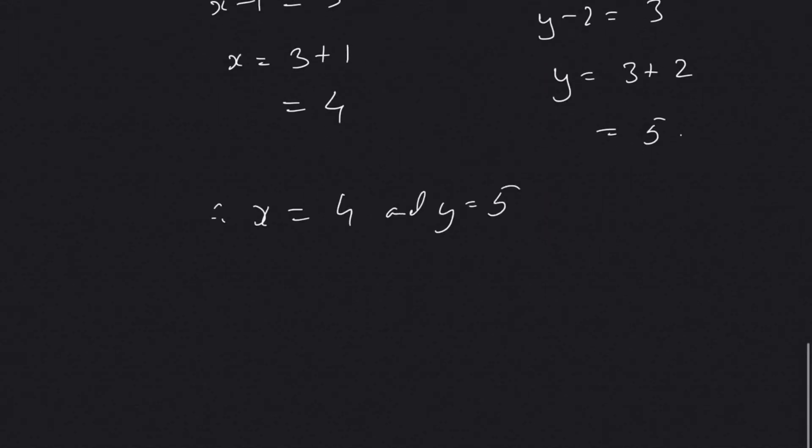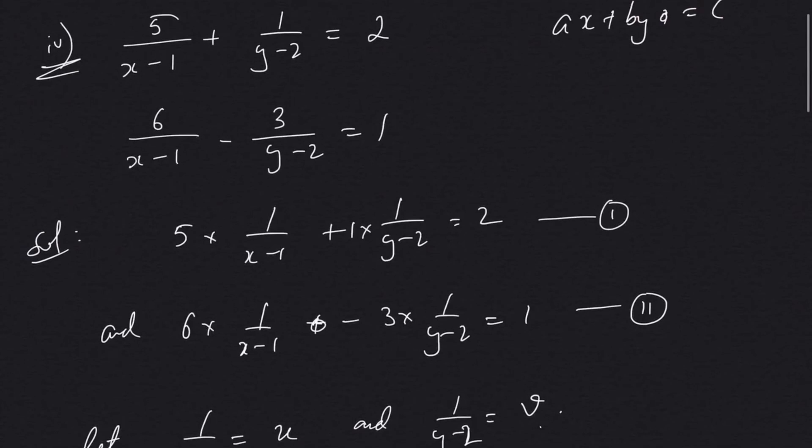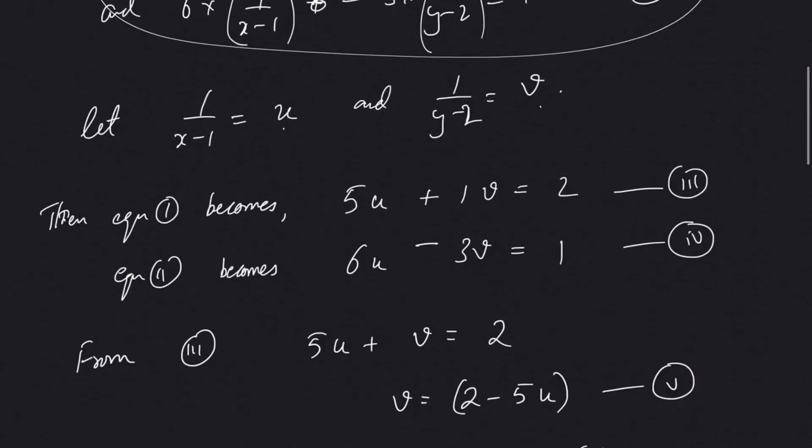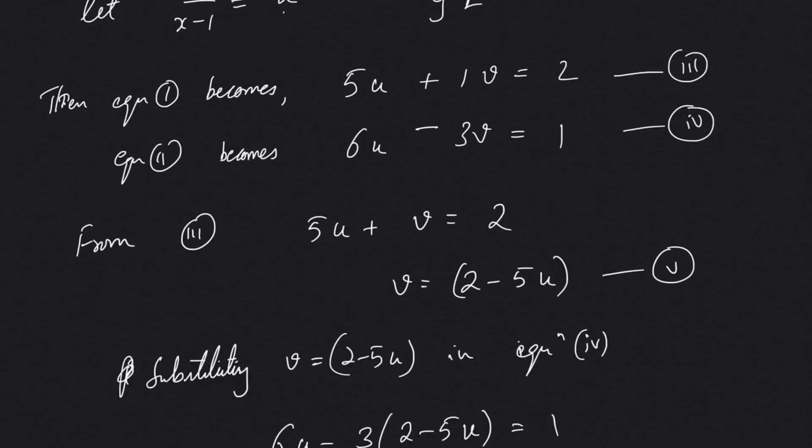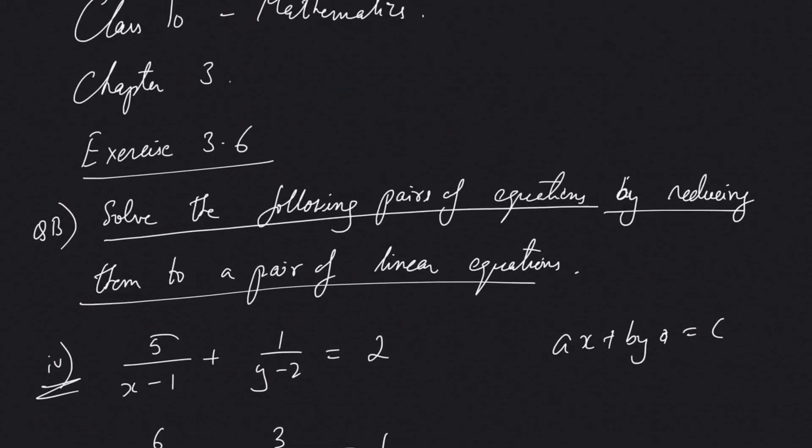So therefore x equal to 4 and y equal to 5. The method is not new, only the first part you will have to identify and do the proper substitutions so that the remaining part is the same as the previous exercises. Signing off from the team of Teach Nagerland.